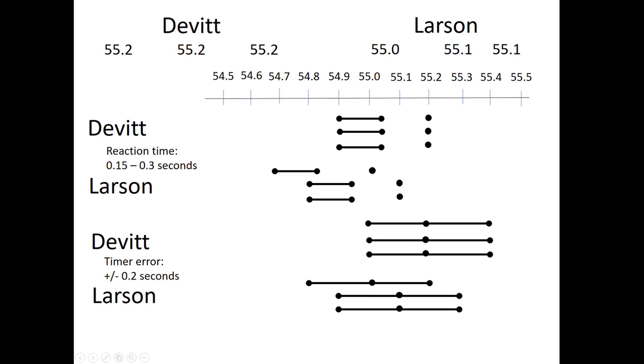And the situation is even worse than that because these two different errors for reaction time and mechanical errors compound. They add together. So although Devitt could have taken as long as 55.4 according to the timer, the true time was at least 0.15 seconds earlier and could be up to 0.03 seconds earlier. So in fact, the true possible range of Devitt's times is this line here. 0.15 seconds back from the slowest and 0.03 seconds back from the quickest. And if we make those corrections for Larson and Devitt, we get a huge overlap of times.